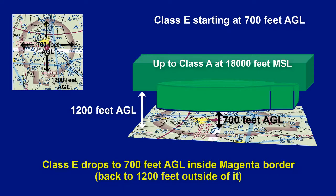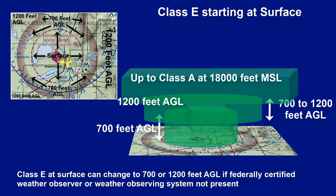Charts display dropped to 700 feet AGL as a faded magenta border. Once you get outside of the border, Class E jumps to the 1,200 foot AGL level. When Class E touches the ground, this is indicated by a dashed magenta line at uncontrolled airports.